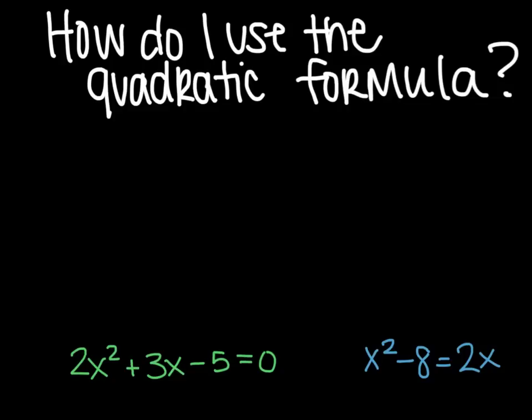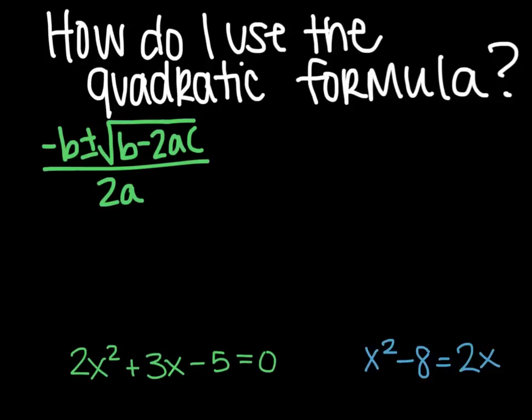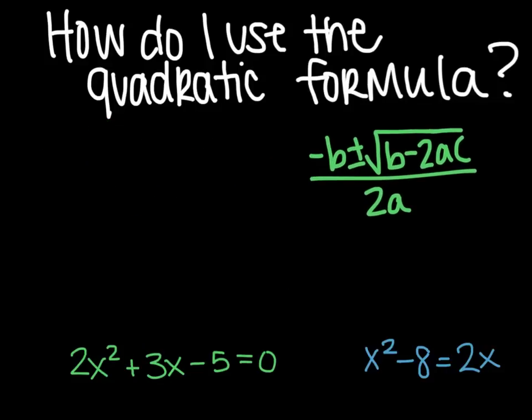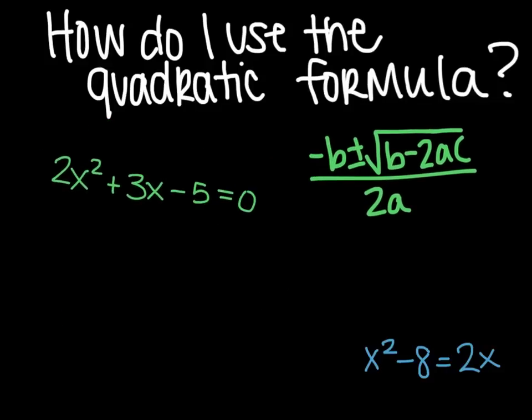So you're going to use the formula that you were given. So opposite of b plus or minus the square root of b squared minus 2ac all over 2a. So you're going to use that and plug in your information.